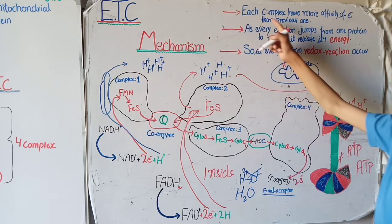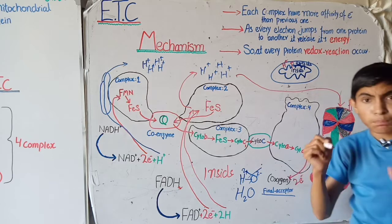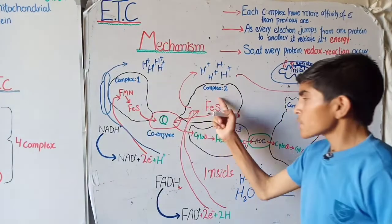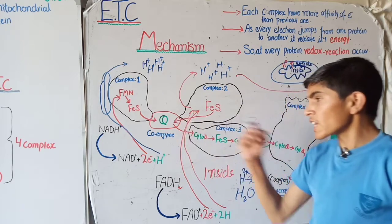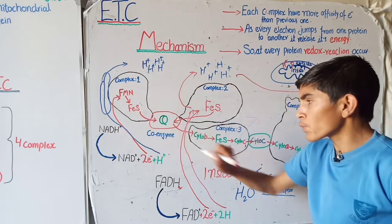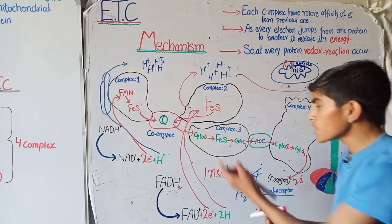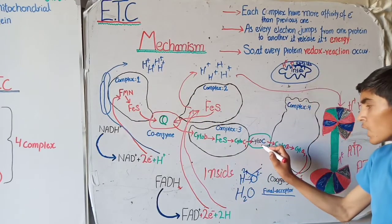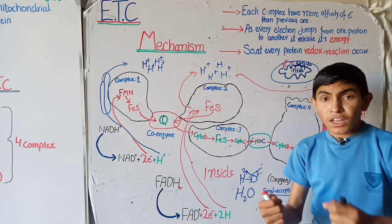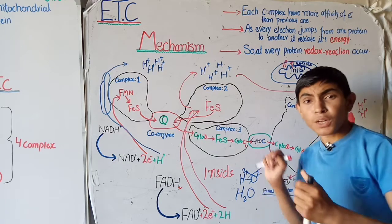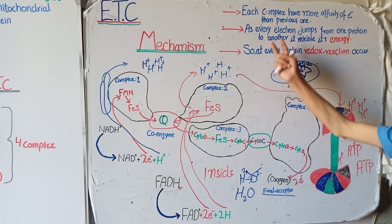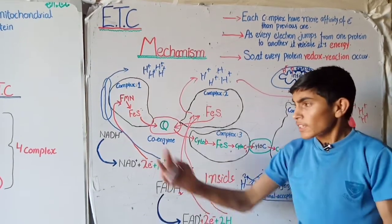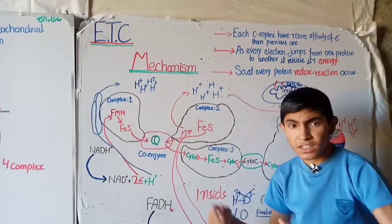Each successive complex has a greater ability to gain electrons than the previous one. This means that electrons move more rapidly as their affinity increases from complex one through to complex four. As each electron jumps from one protein to another, it releases energy. This is the core principle of the electron transport chain — the jumping of electrons from one protein to another releases energy.